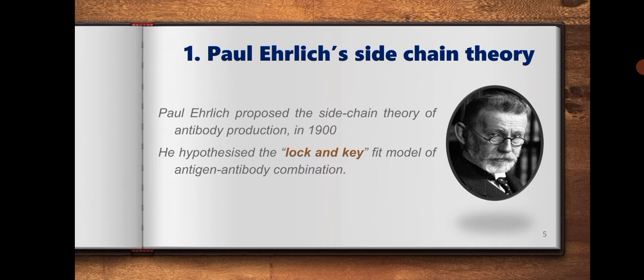Paul Ehrlich's sidechain theory was the first theory proposed for antibody production. Paul Ehrlich proposed this theory in 1900. He hypothesized the lock and key model of antigen-antibody combination.